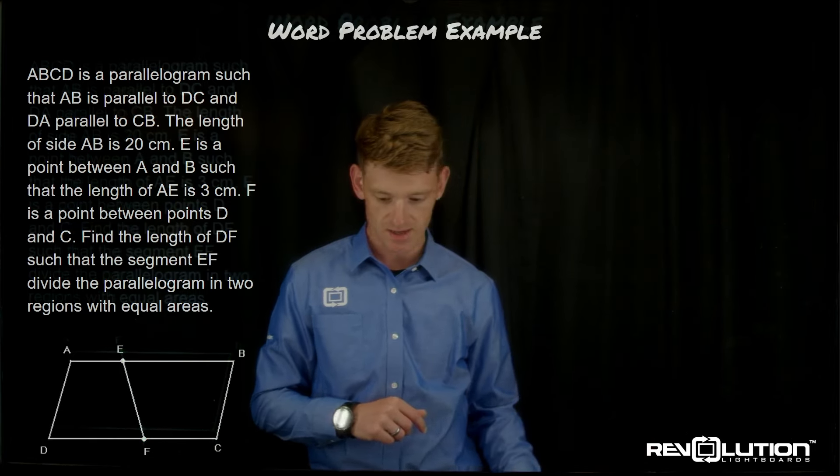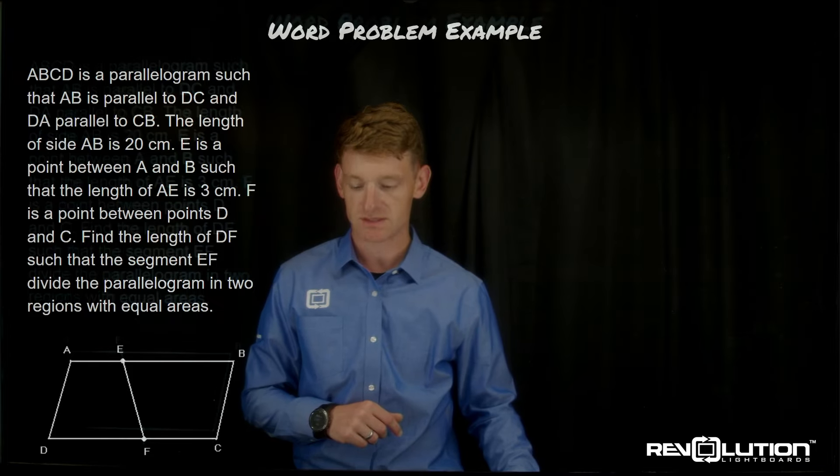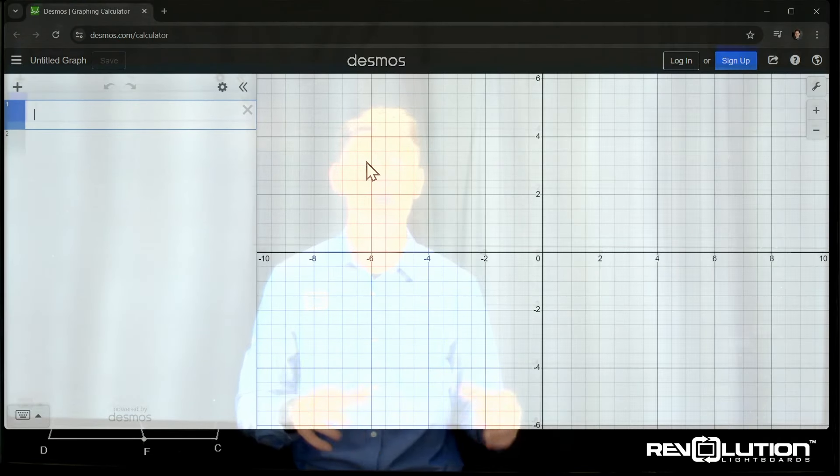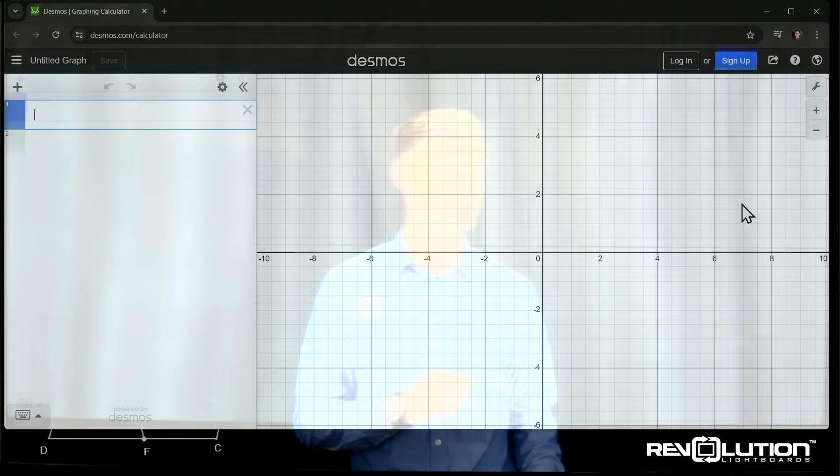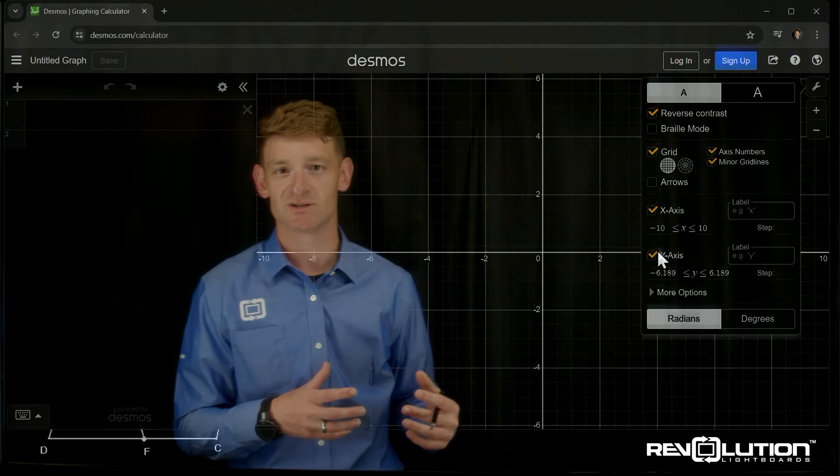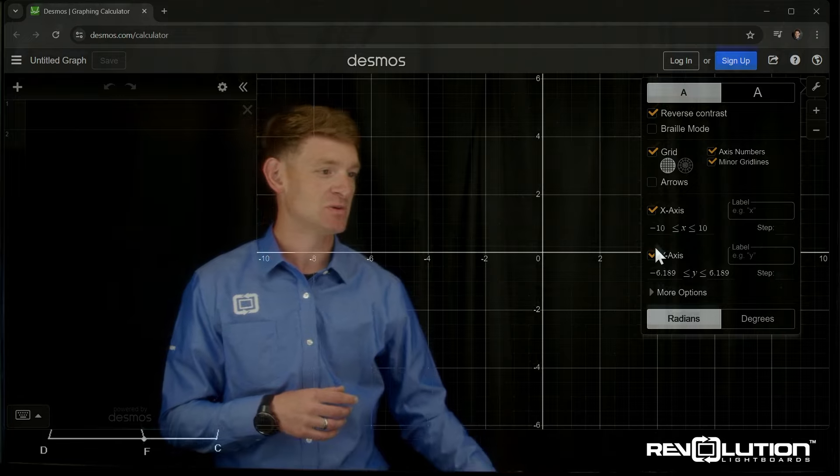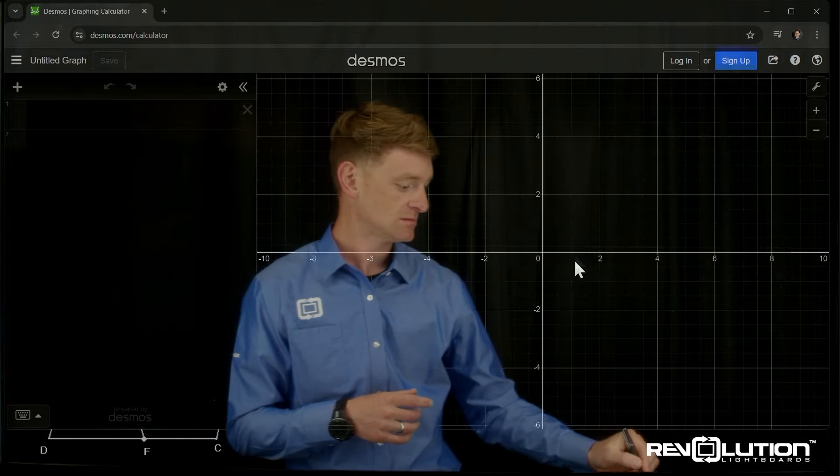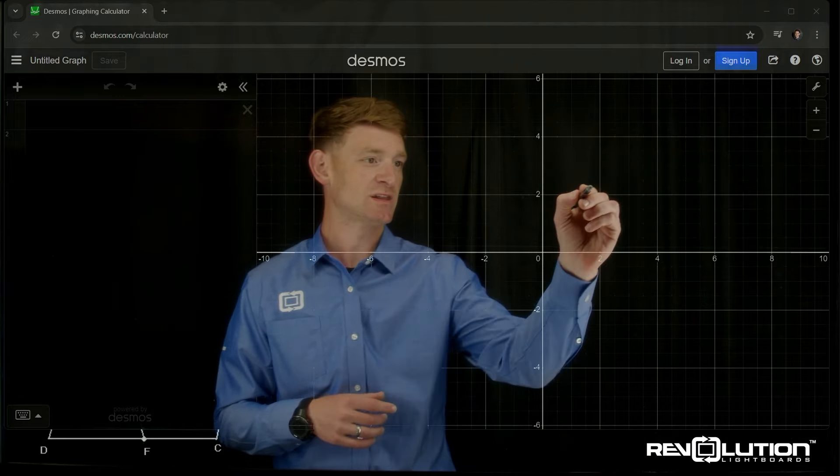Next, we have Desmos Graphing Calculator. With this one, of course, we need to change the color scheme so there's reverse contrast. I can now have the ability to see this XY axis directly in front of me here.